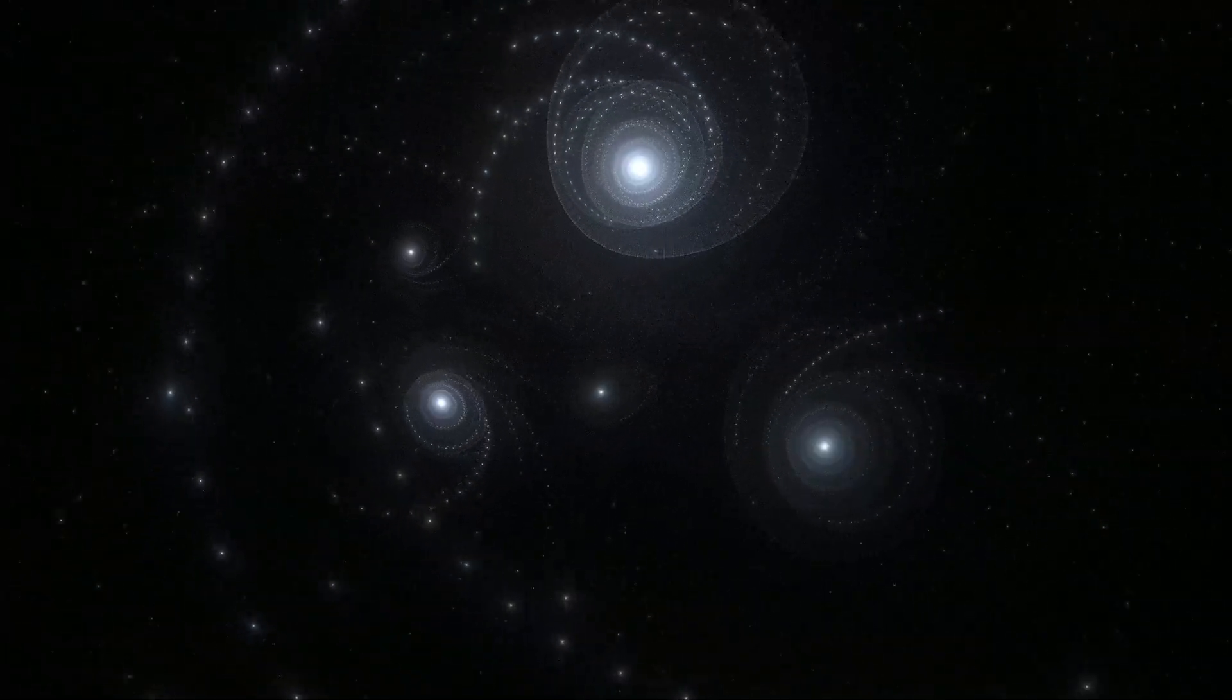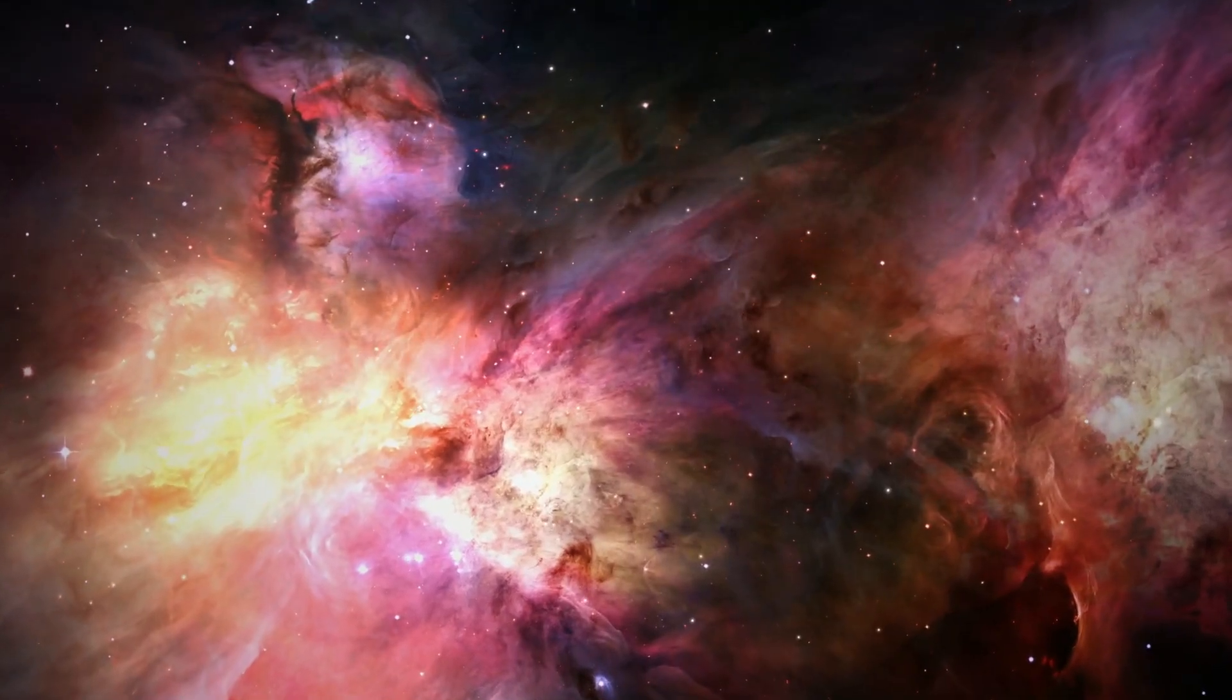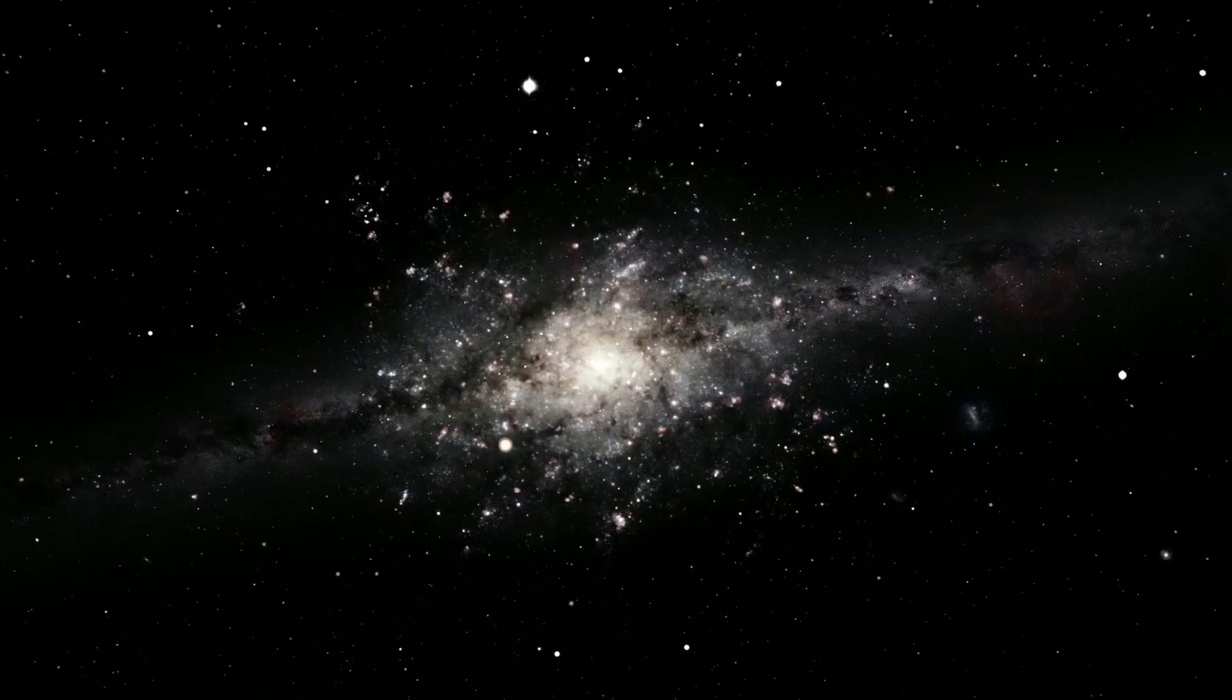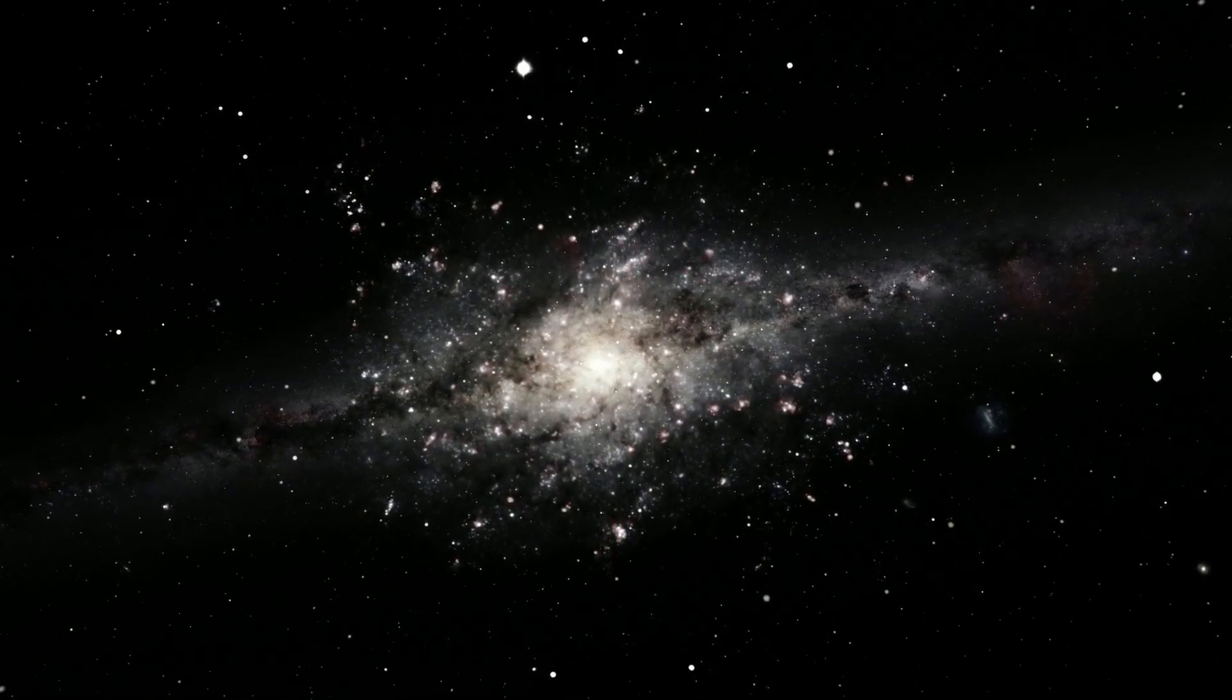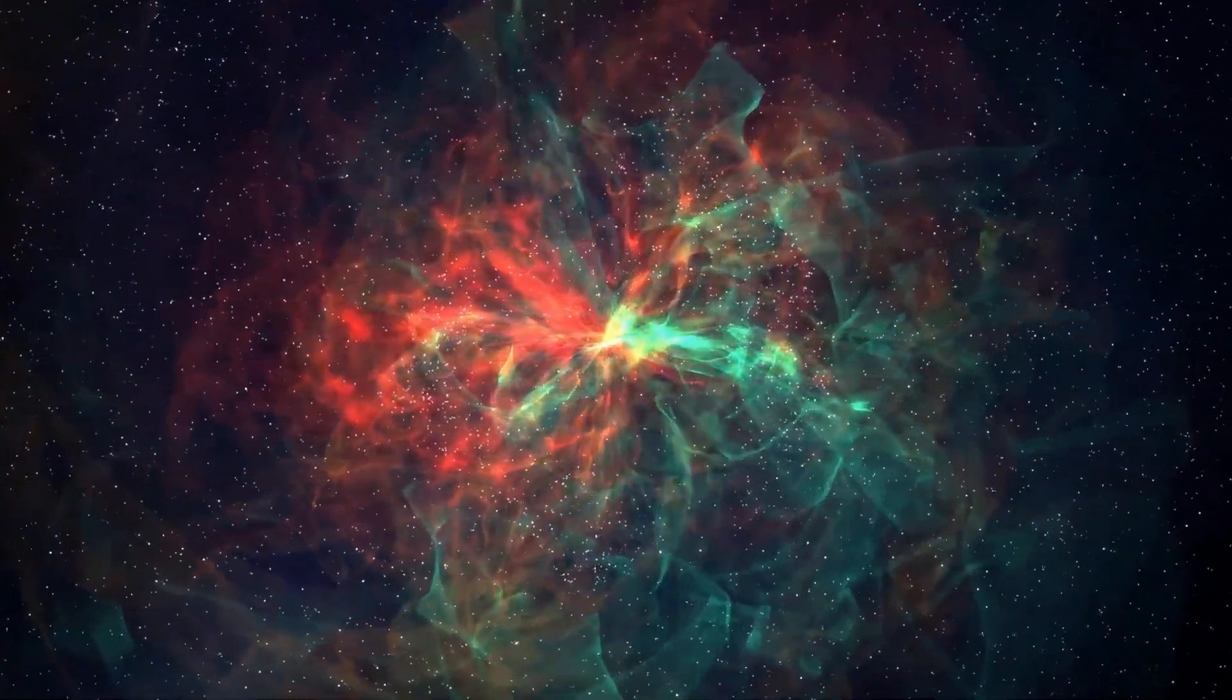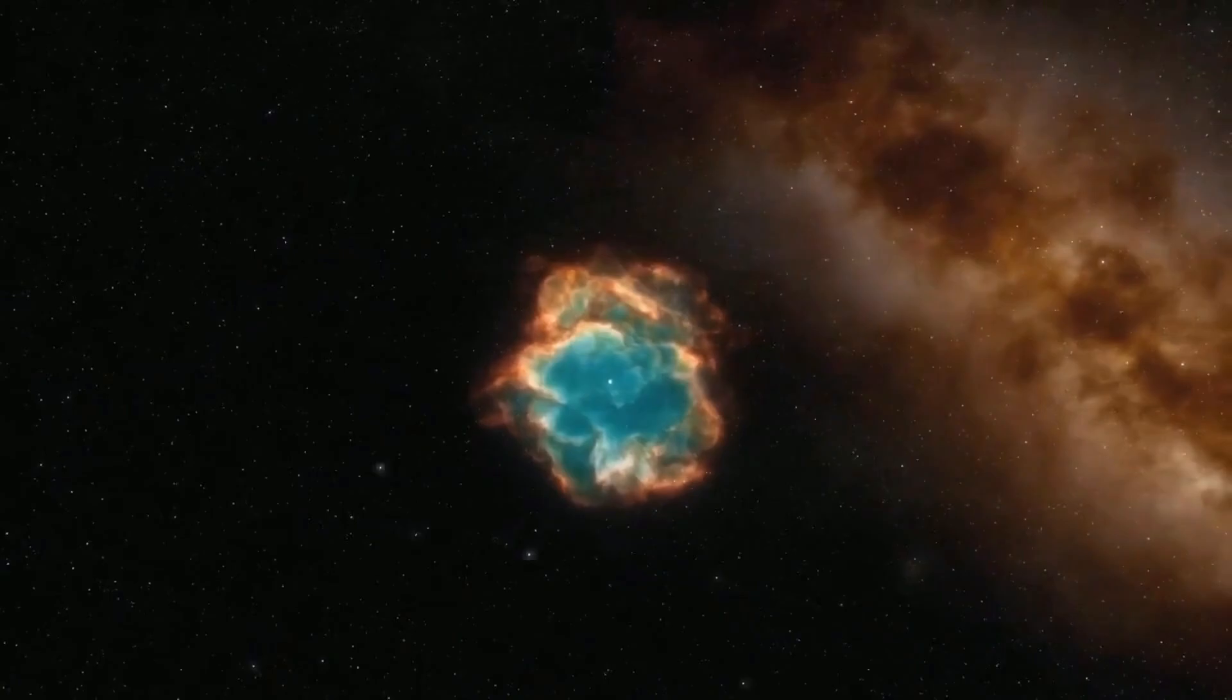This structure resembles a web where galaxies form along threads, connecting at nodes. Dense regions of space attract matter and contribute to the formation of star clusters and galaxies, while less dense areas may give away their matter to dense regions, leading to the formation of cosmic voids. All these processes adhere to the laws of gravity and the expansion of the universe, determining the dynamics of the cosmic structure's evolution.